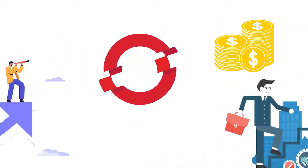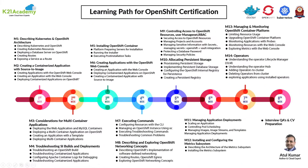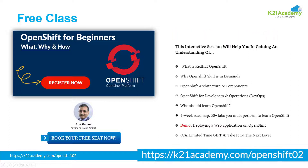The class covers OpenShift architecture and components, an eight-week roadmap, and 30-plus step-by-step hands-on labs you must perform to learn Red Hat OpenShift — suitable for complete beginners. There is also a limited-time gift for action takers, so register for the two-hour free class at k21academy.com/openshift02.